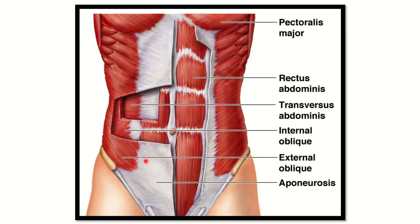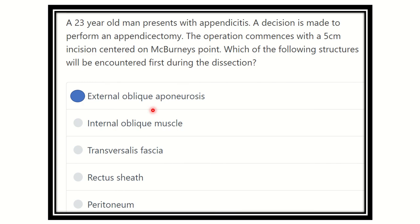In this region, the external oblique muscle converts into an aponeurosis. Here you can see the outer layer is the aponeurosis of the external oblique muscle. After cutting through this aponeurosis, there is the internal oblique muscle, and finally the transversus abdominis muscle. The first structure encountered among the options is the external oblique aponeurosis, because after skin and superficial fascia it is the only structure present.